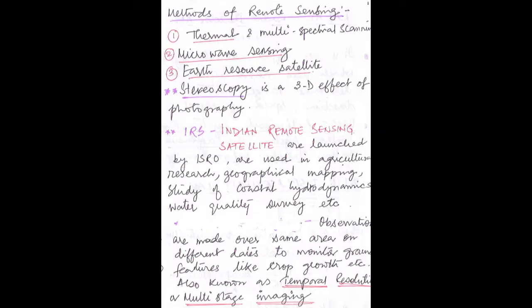Next are the methods of remote sensing. There are three methods: number one, thermal and multispectral scanning; number two, microwave sensing; number three, earth resource satellite. Here I want to mention that stereoscopy — sometimes the confusion happens that stereoscopy is also a method of remote sensing, but no, it is a 3D effect of photography. So stereoscopy is the 3D effect of photography; it is not a method of remote sensing. There are only three methods as discussed.